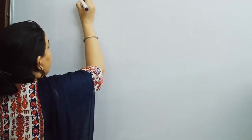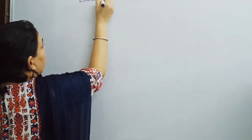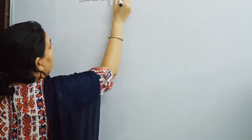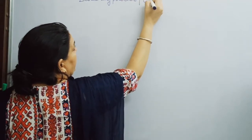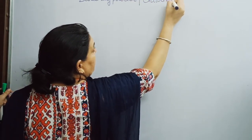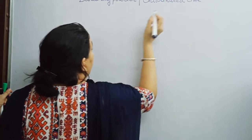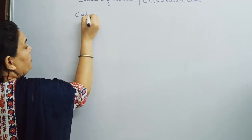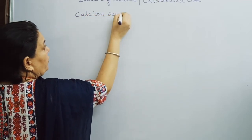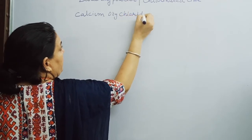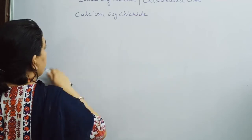The common name of this salt is Bleaching Powder, which is also known as Chlorinated Lime. Its chemical name is Calcium Oxychloride and its molecular formula is CaOCl2.